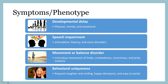Angelman syndrome is associated with many different symptoms. Some of the symptoms include developmental delays, which can be physical, mental, and emotional, as well as speech impairments, which impact one's articulation, fluency, and voice. This disorder also impacts one's movement and balance by causing tremulous movement of limbs, unsteadiness, clumsiness, and jerky motions. Lastly, this disorder is associated with behavioral uniqueness, which includes frequent laughter and smiling, happy demeanor, and being easy to excite.